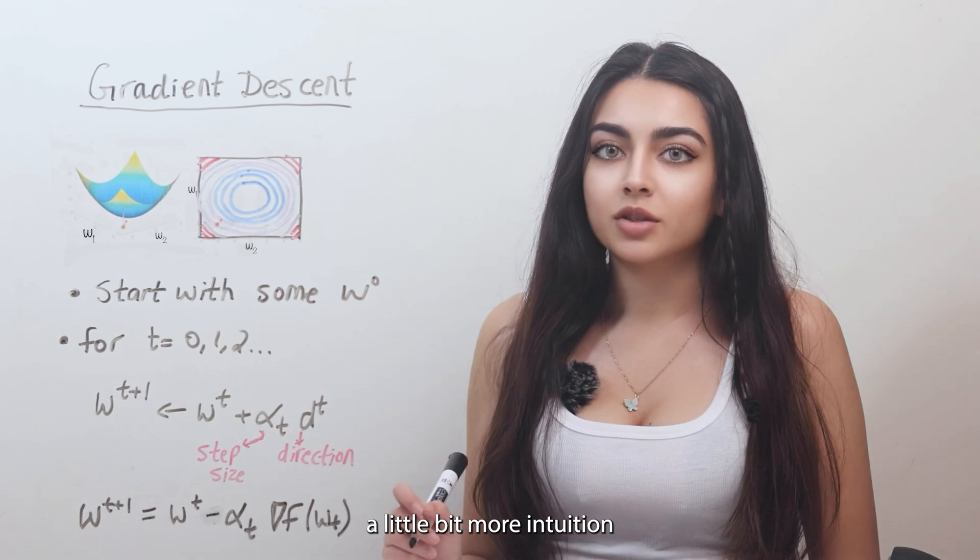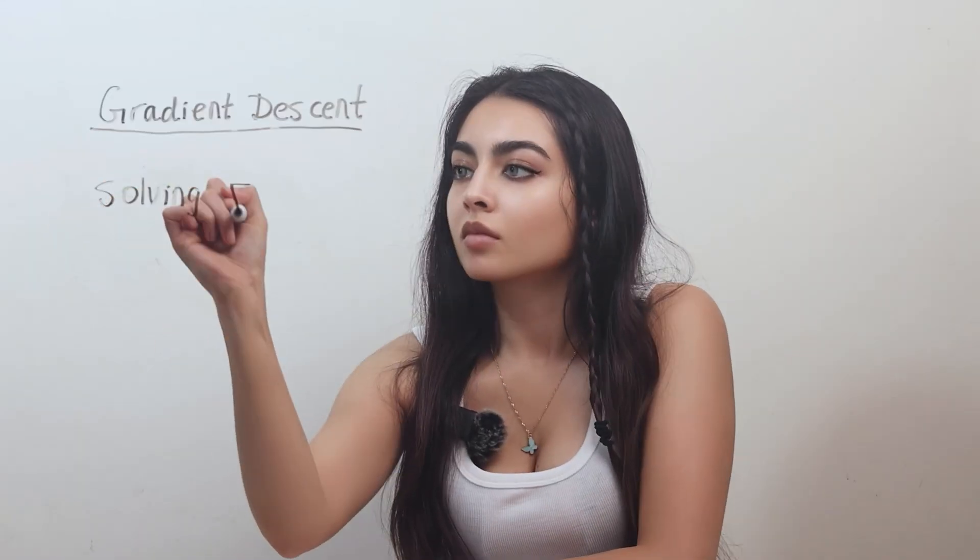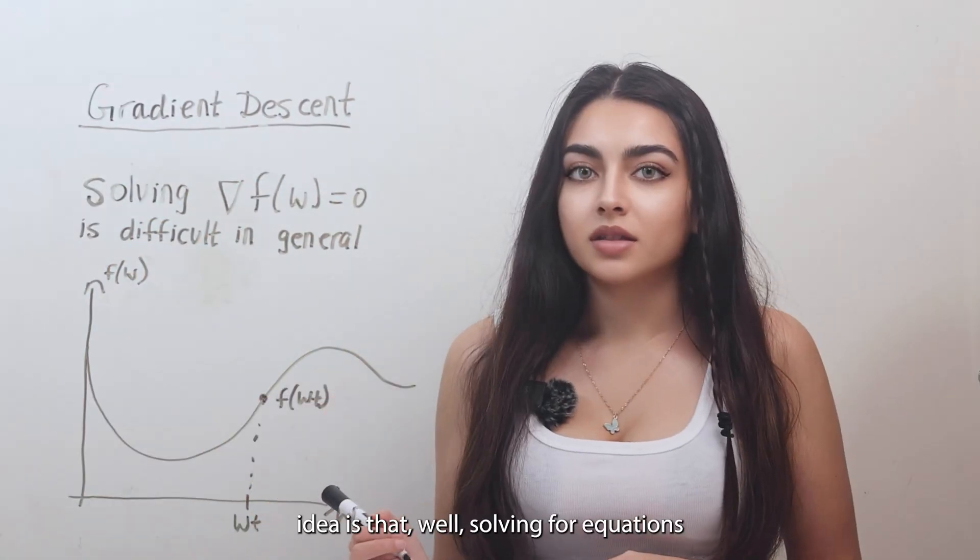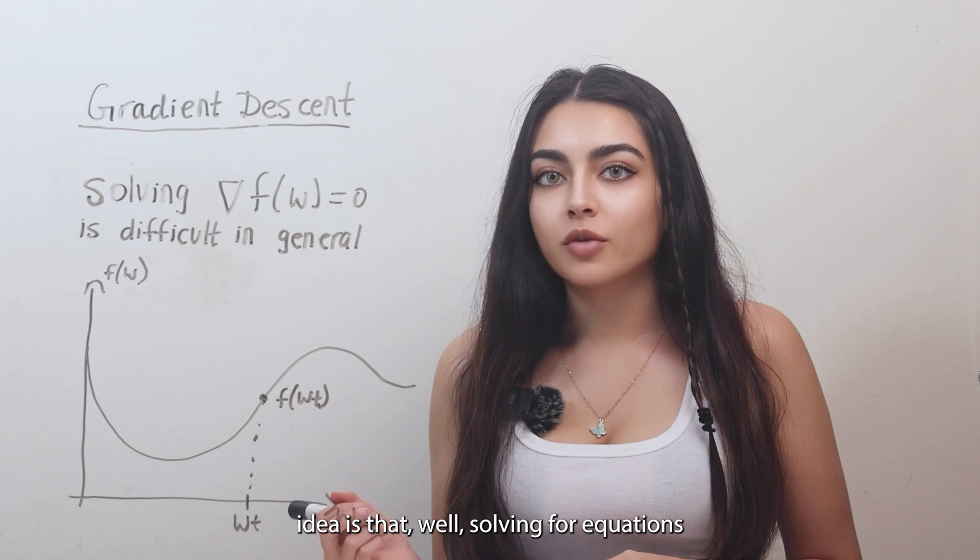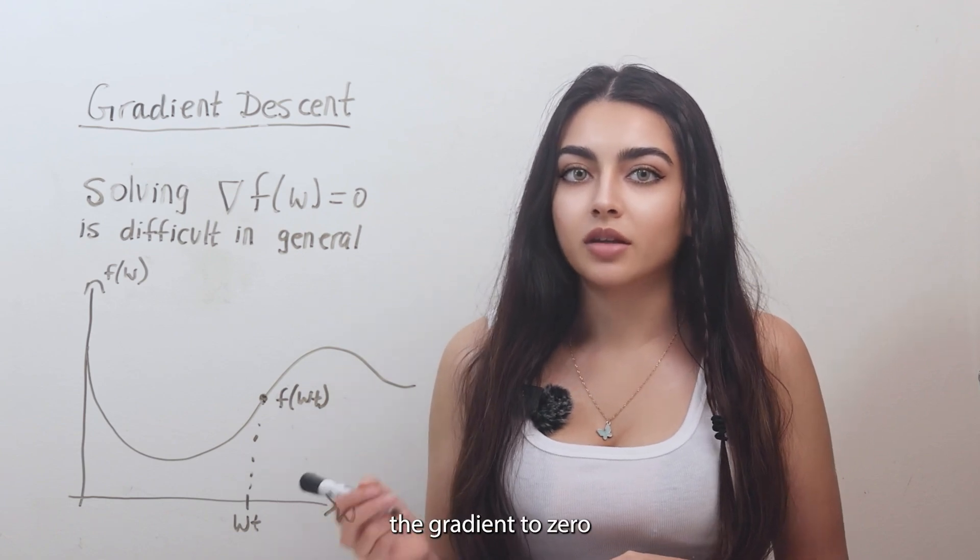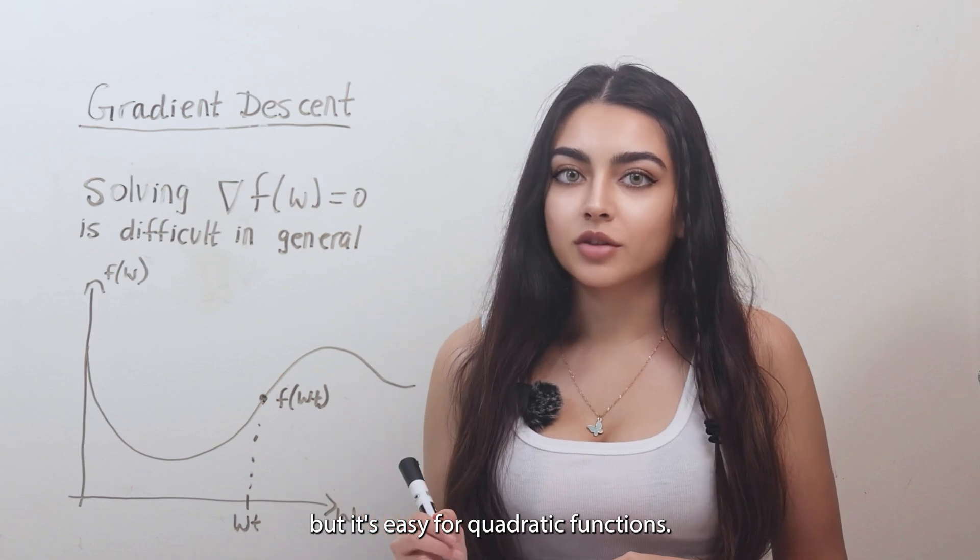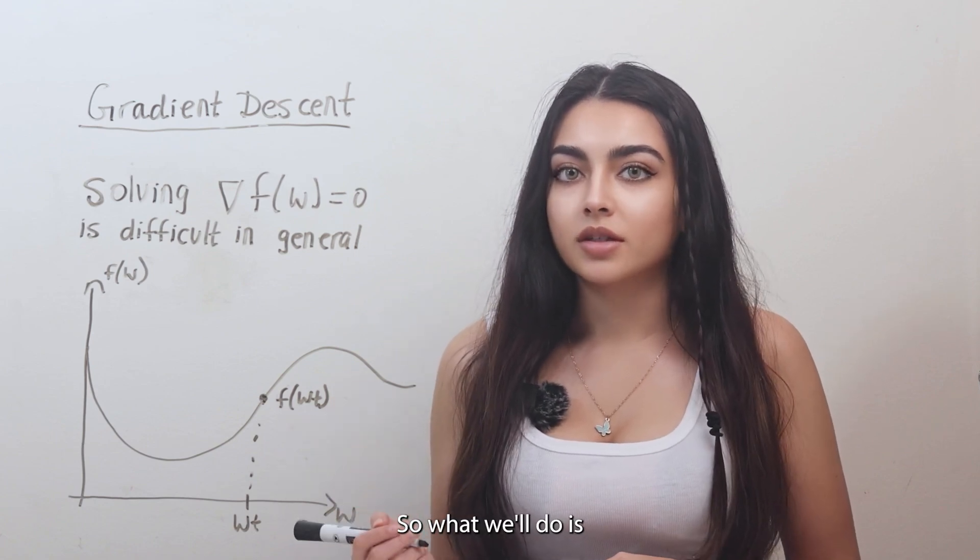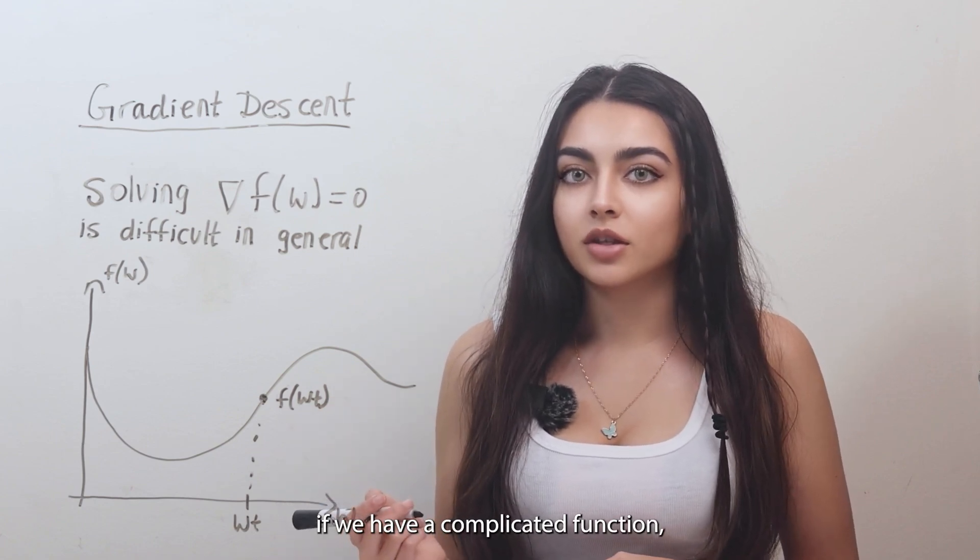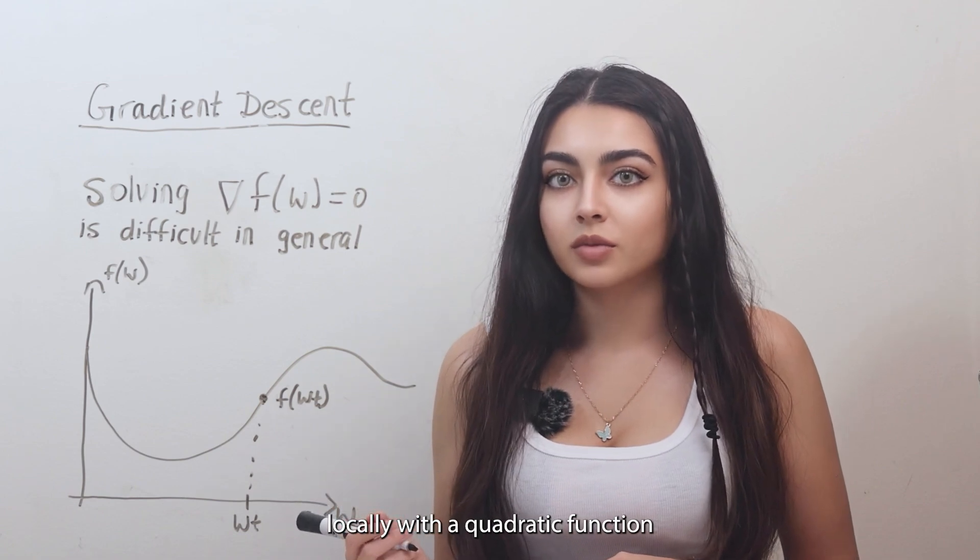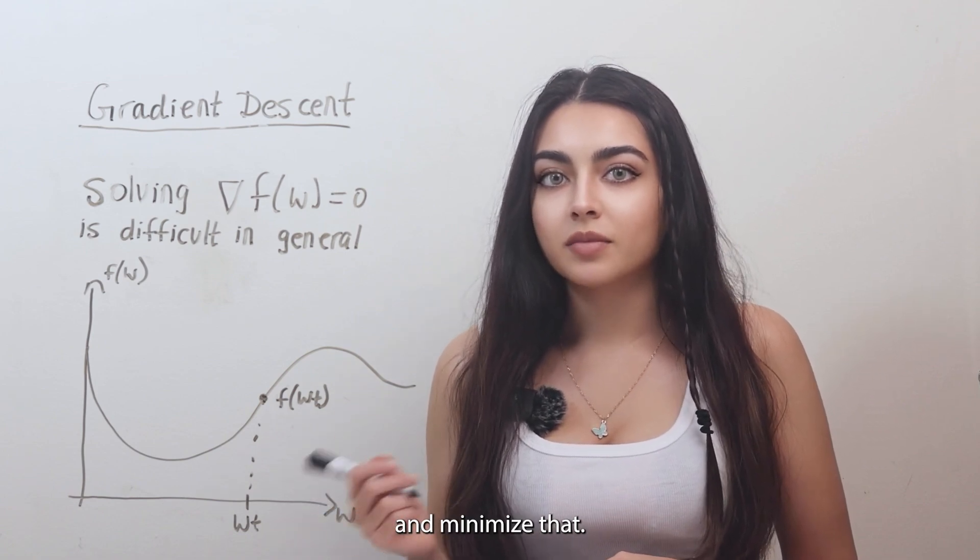Let me give you a little bit more intuition behind what we are doing. So the main idea is that solving for equations or setting the gradient to zero is in general very difficult, but it's easy for quadratic functions. So what we'll do is, if we have a complicated function, we'll just approximate it locally with a quadratic function and minimize that.